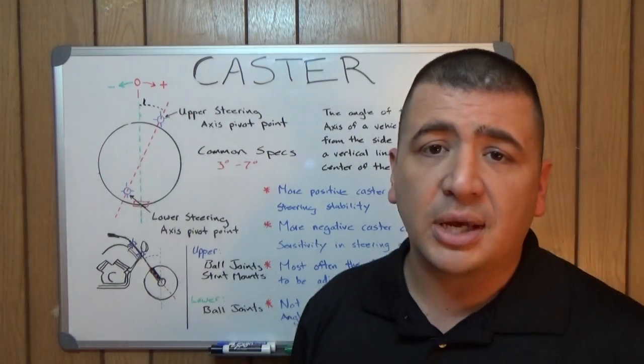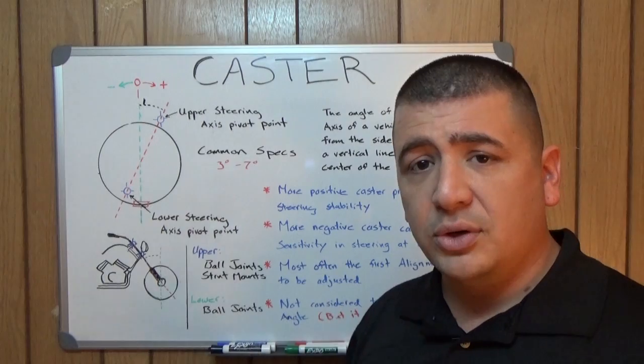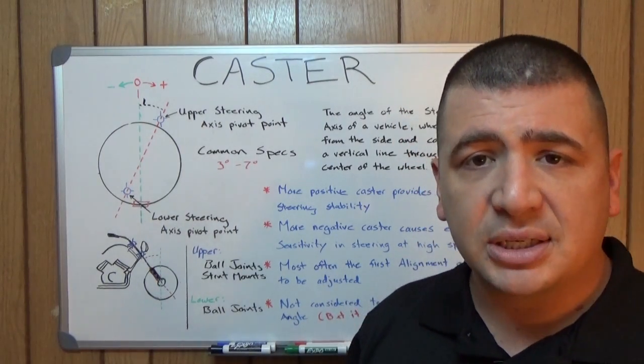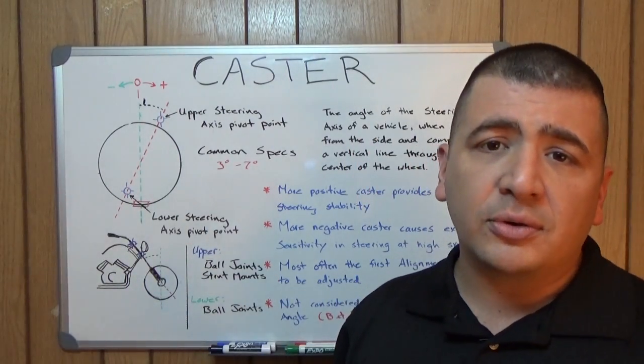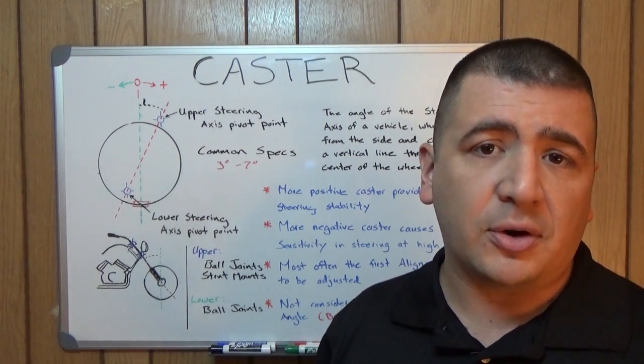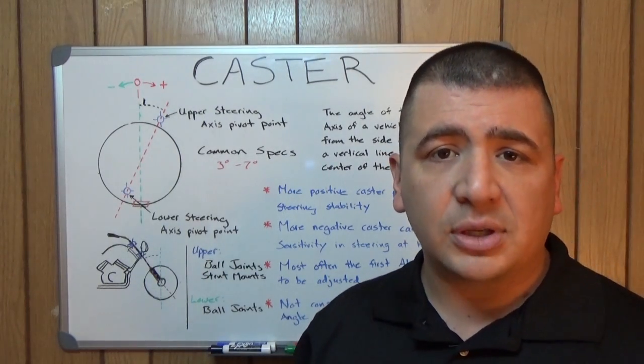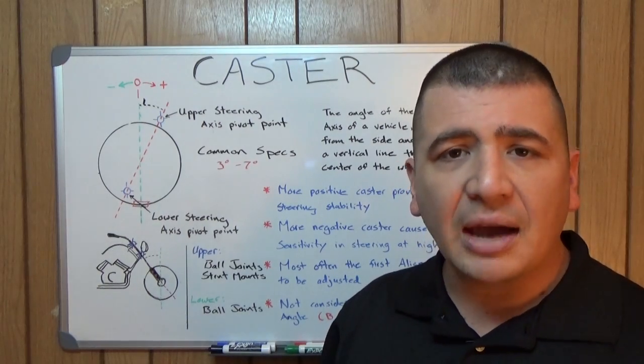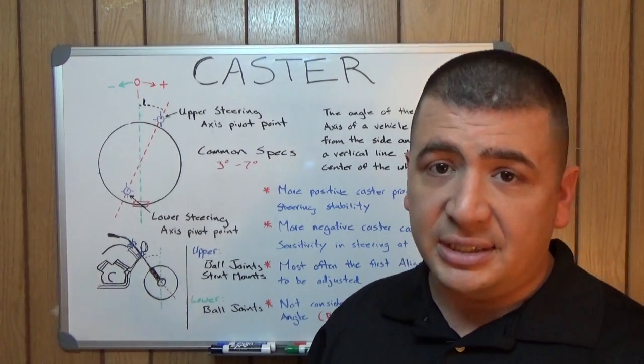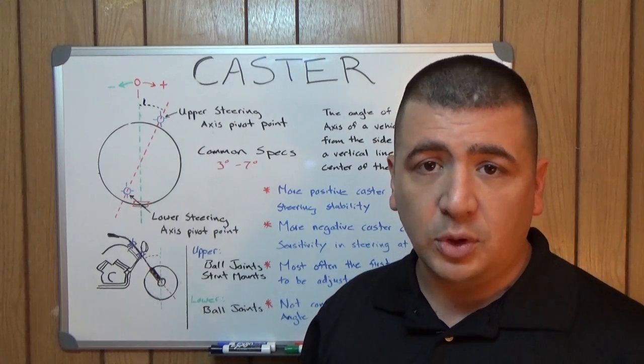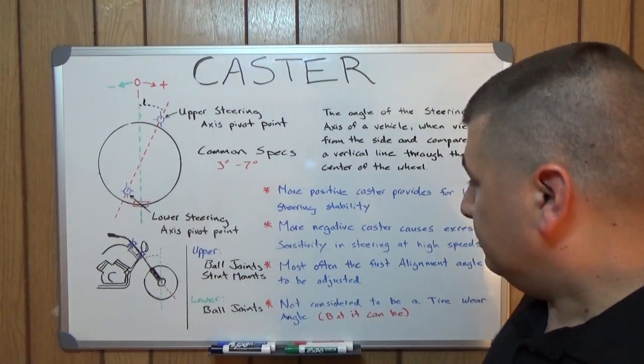Most often, caster is the first angle to be adjusted. On any given axle, the order is going to be caster, camber, toe. Now on the rear of vehicles, caster is almost never there. I've never come across a situation where you'll have it, and 99% of the time there's never going to be any caster adjustment on the rear.